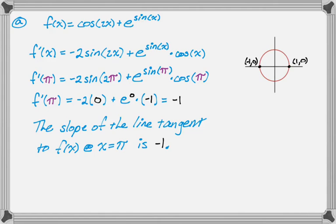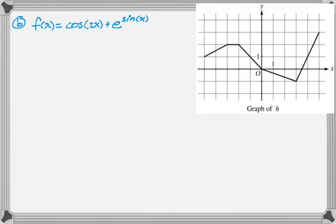Part B introduces a new function k(x), which involves f(x) and h(x). Here h(x) is given as a graph and f(x) is the same function as before. k(x) equals h(f(x)), so it's a composition, and we want to find k'(π). This is a straight application of the chain rule.